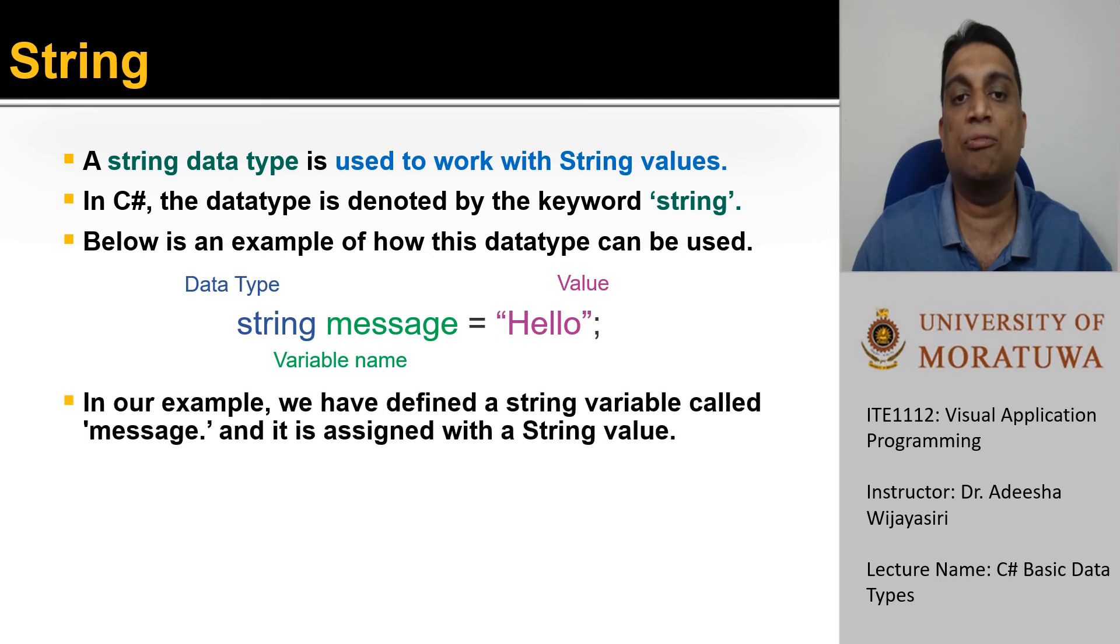String values are denoted by the double quotation marks as you can see here. C sharp provides many tools to manipulate strings. We will discuss them in detail in a later video.